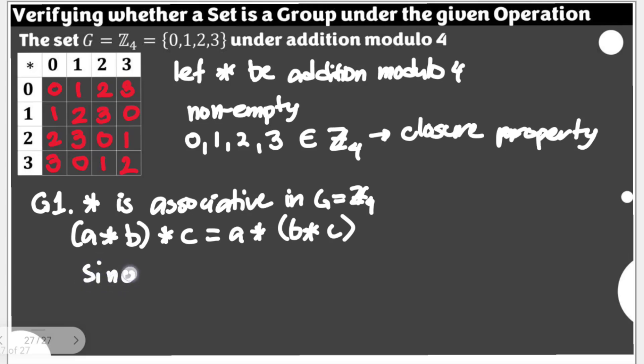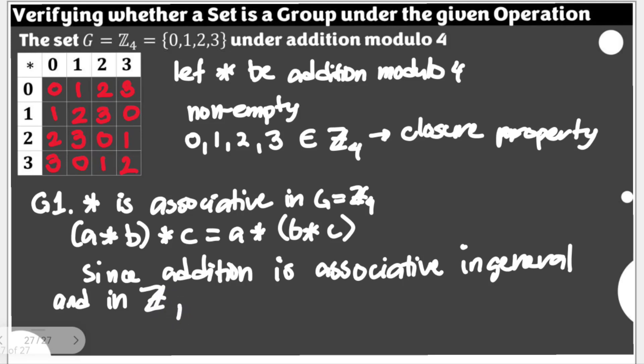So we can say here that since addition is associative in general and in Z, set of integers, while at the same time, we can say that the elements of Z4, 0, 1, 2, and 3, are also elements of Z. Then we can say that star is associative in, which is associative means the addition modulo, it's associative in Z sub 4.